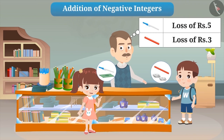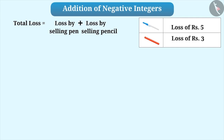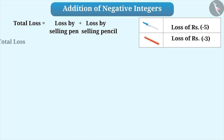Let's understand how addition of negative integers is done. Let us suppose a shopkeeper faces a loss of Rs.5 by selling a pen and a loss of Rs.3 by selling a pencil. If we have to find the total loss, then we have to add their individual losses. Since loss is represented by negative integers, loss by selling a pen is represented as -5. Similarly, loss by selling a pencil is represented as -3. This means the total loss is -5 + -3.